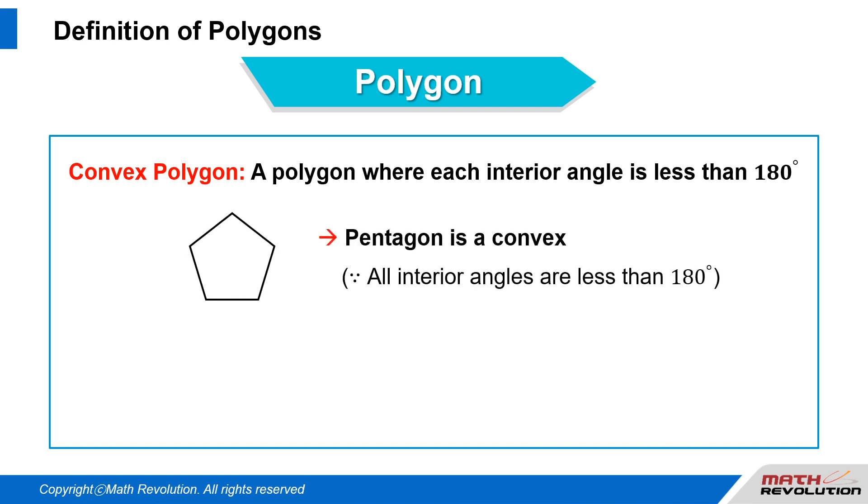Pentagon is a convex polygon since all interior angles are less than 180 degrees. A cross is not convex since angle X is 270 degrees, which is greater than 180 degrees.